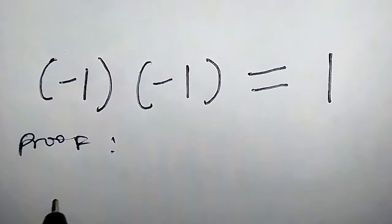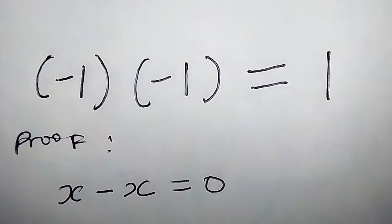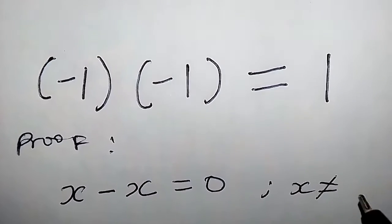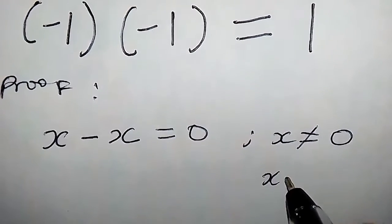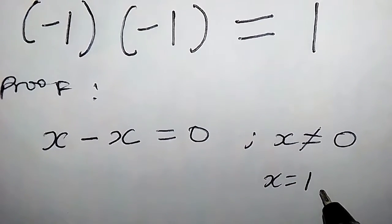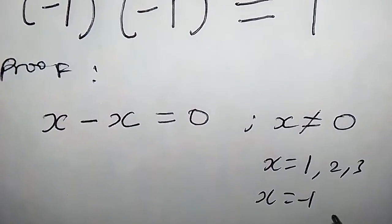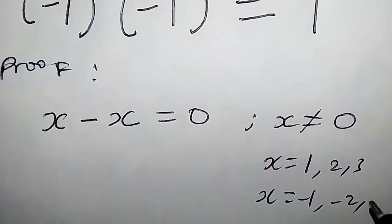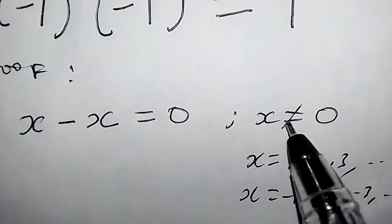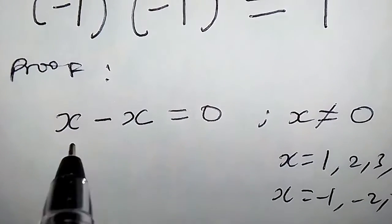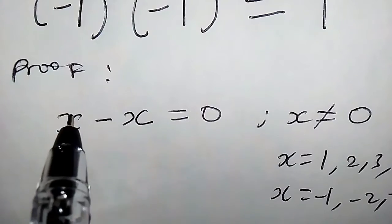Let's suppose we have x minus x equals 0, such that x is different from 0. That is, x can never be 0, though x could be 1, 2, 3, negative 1, negative 2, negative 3, and so on. But x is different from 0, so let's proceed further.